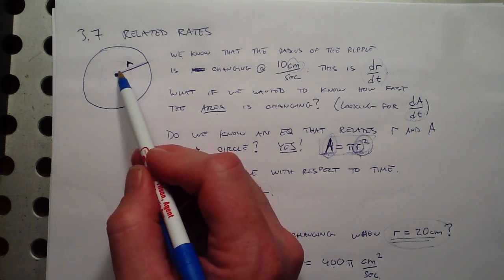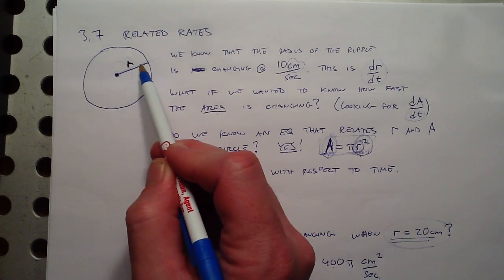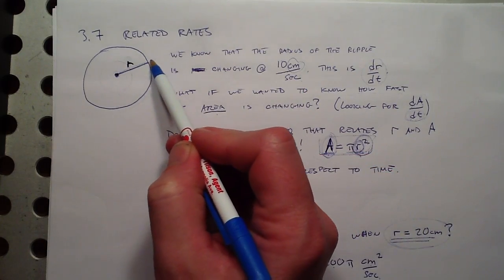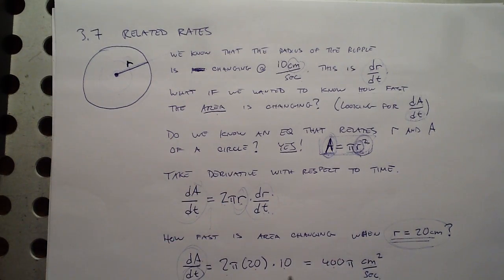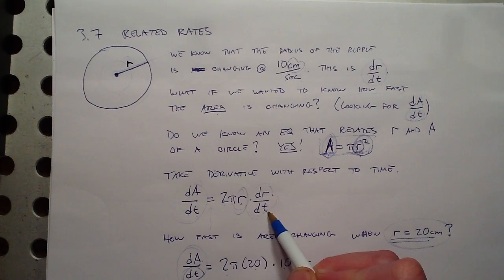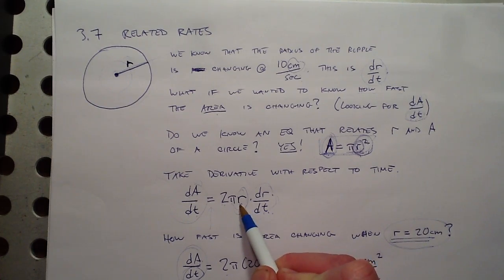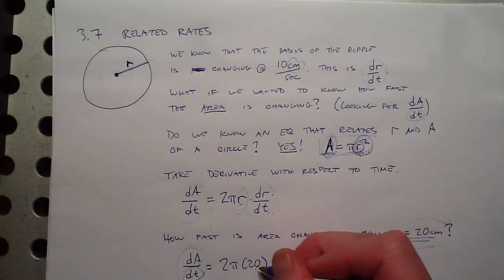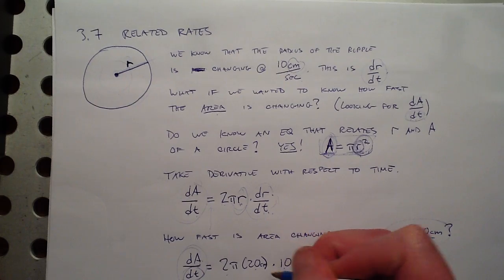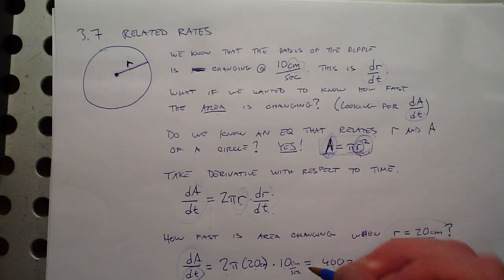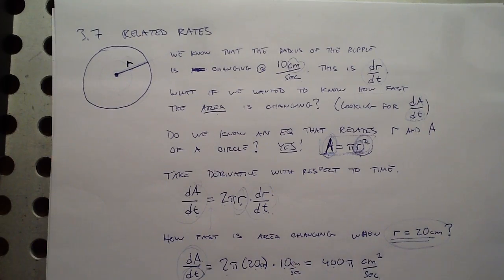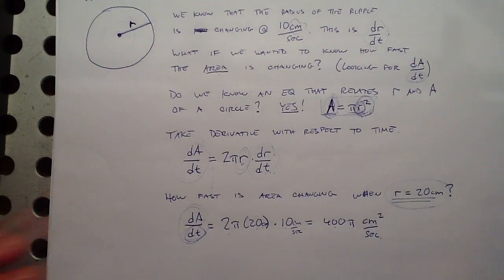The area is changing at 400 pi square centimeters per second when the ripple has grown to a radius of 20 centimeters. Worth noting: although the radius is changing at a constant rate of 10 centimeters per second, the area is not changing at a constant rate, because it depends not only on dr/dt — which is constant — but also on the radius. The units work out as centimeters times centimeters per second, giving square centimeters per second.